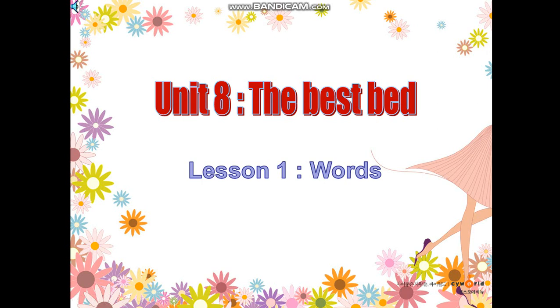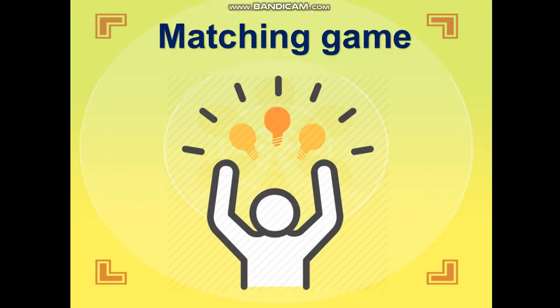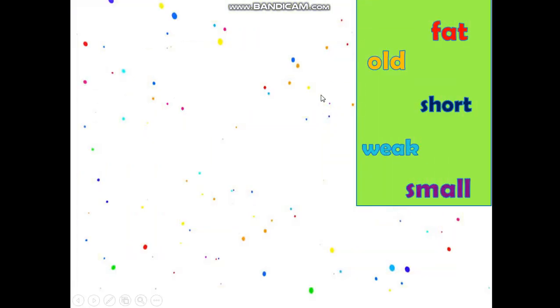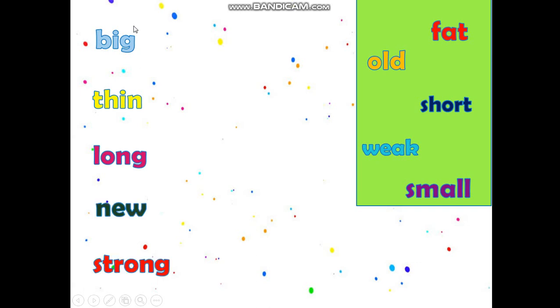To begin our lesson today, let's play a game. It's a matching game. Now you can see there are 5 adjectives in the box and you have to find out 5 adjectives which has opposite meanings. And after that you will write them on the blanks. You have 20 seconds to do that. Go!